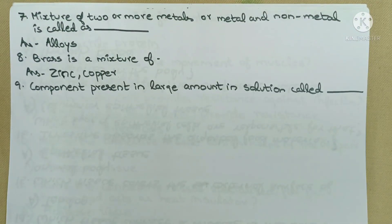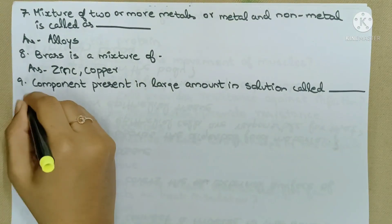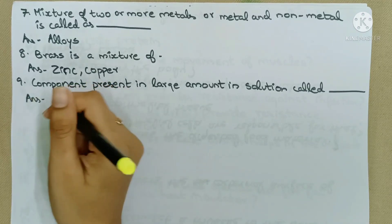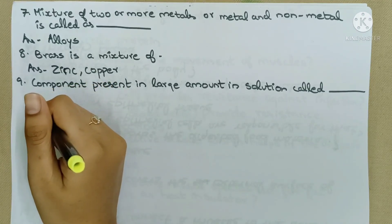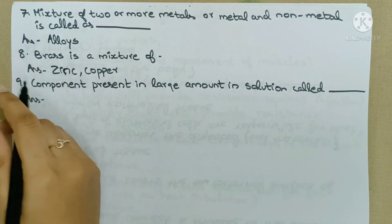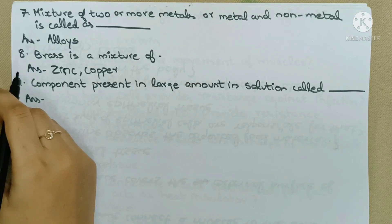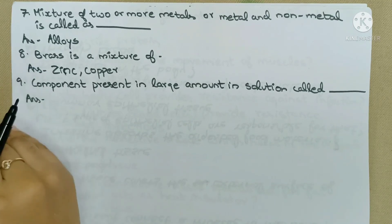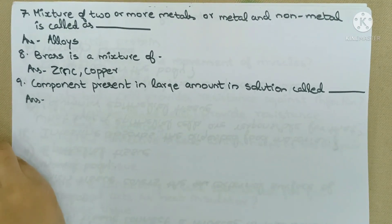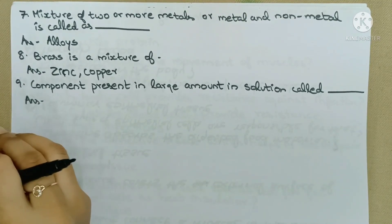Next question: The component present in large amount in a solution is called what? In a solution, the component present in large amount — about 95% of the time — is called the solvent.